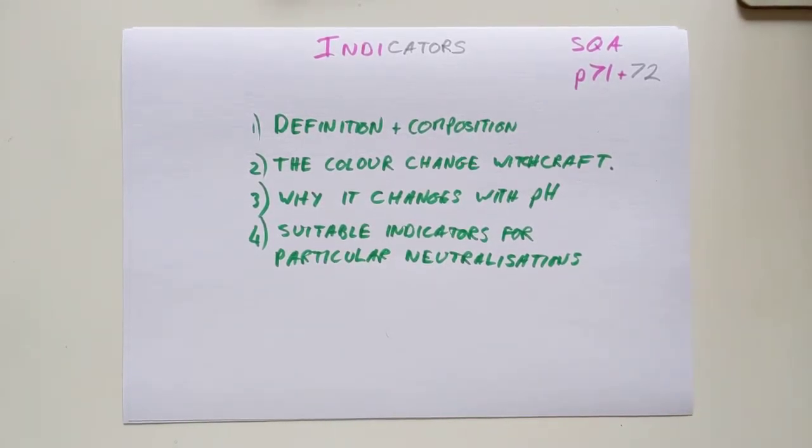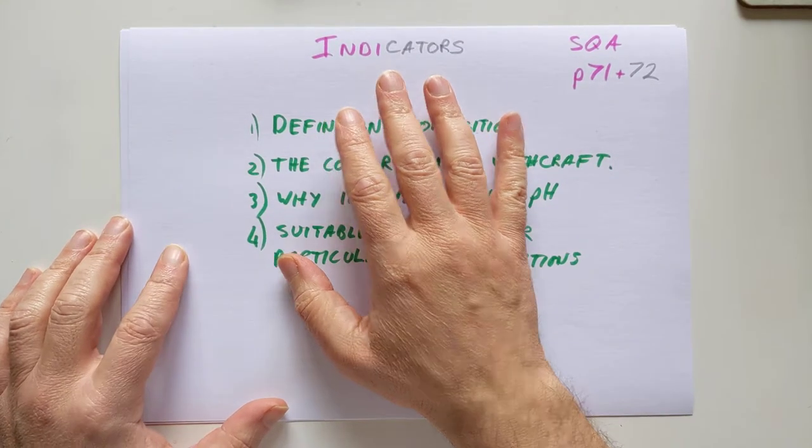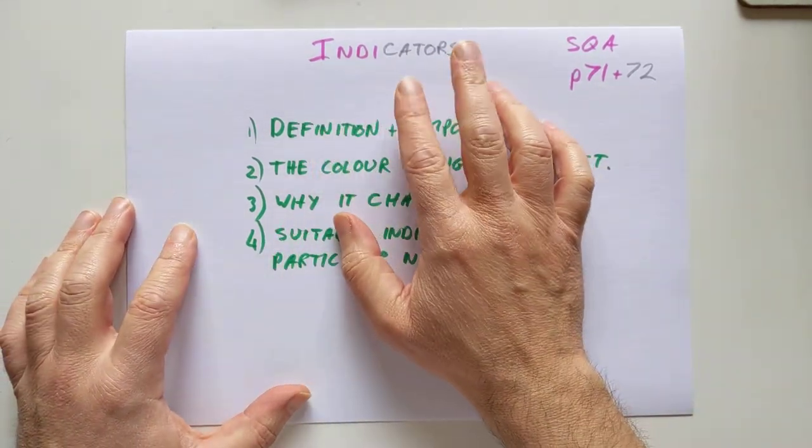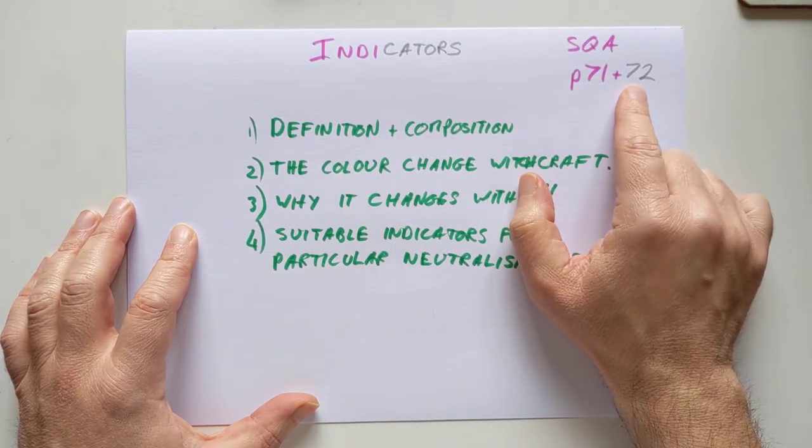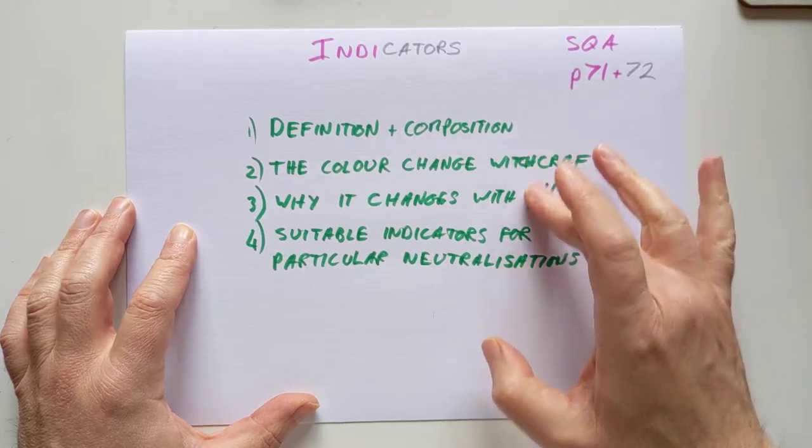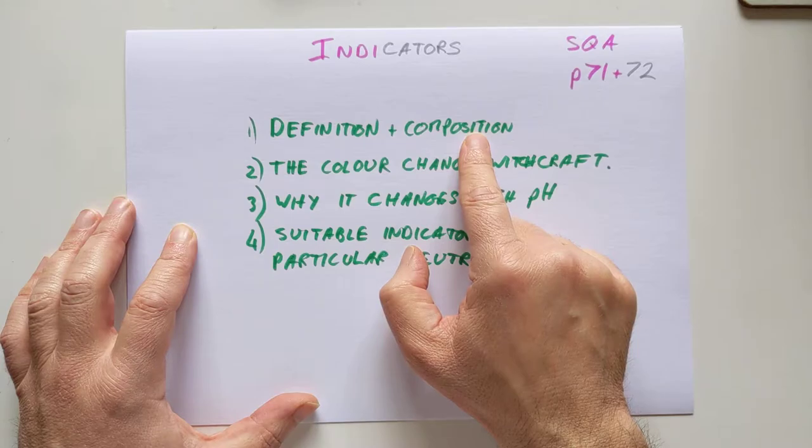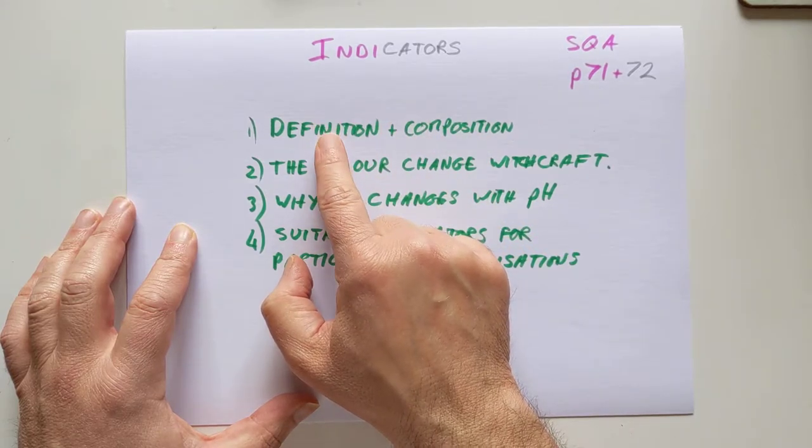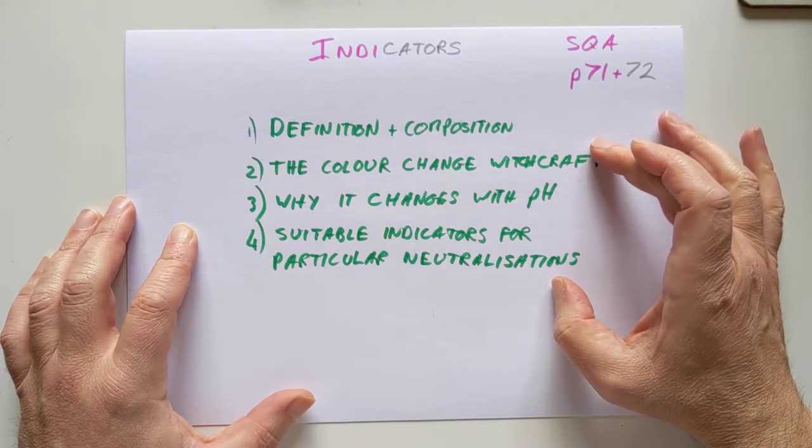Good afternoon, folks. Sorry about the jittery camera work. There we go. Welcome back to Advanced Higher Chemistry. We are going to be looking at indicators today. This is SQA pages 71 and 72. That's the learning outcomes.